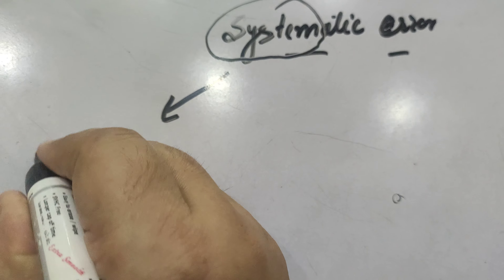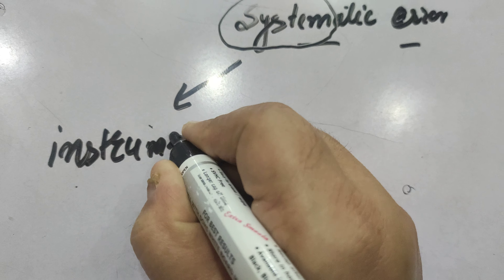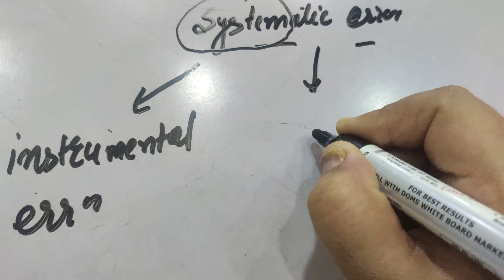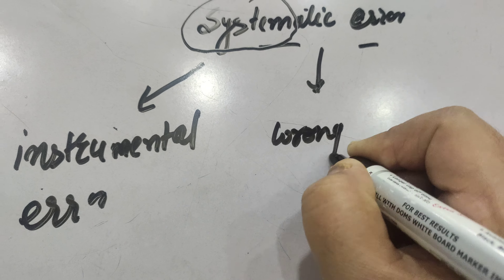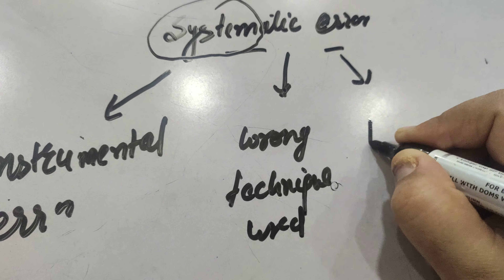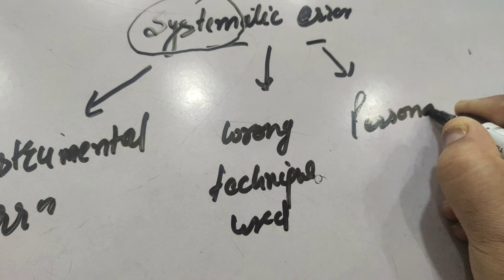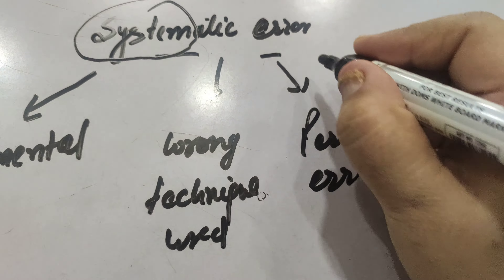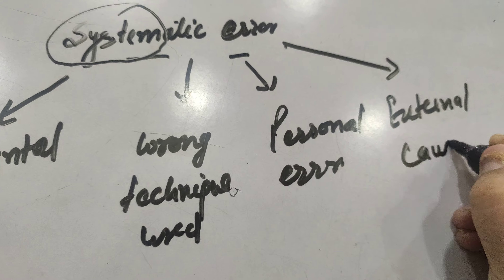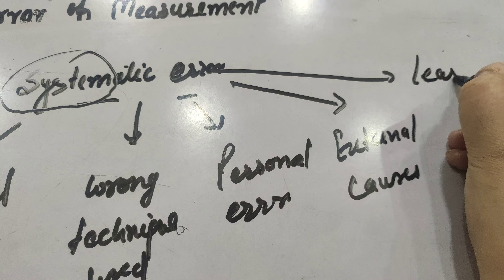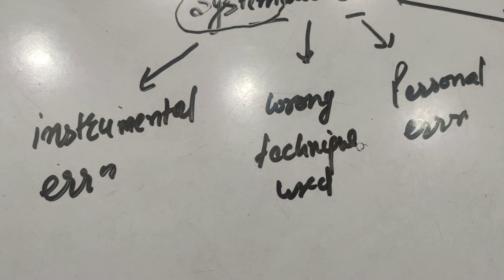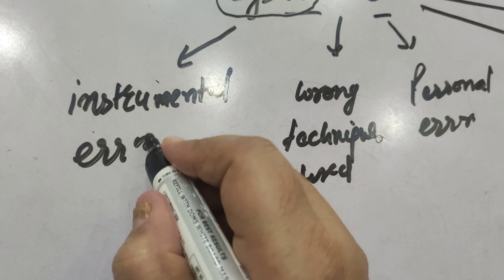Based on that, systematic errors are classified as: number one, instrumental error; number two, due to the wrong technique used; number three, due to personal error; next is due to external causes; and due to least count error.